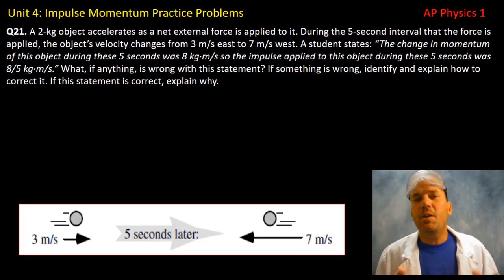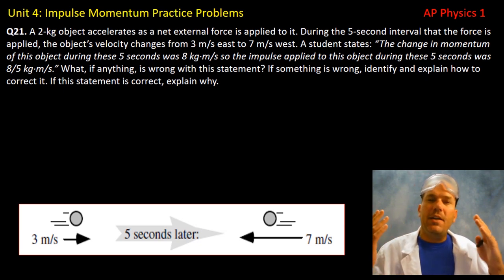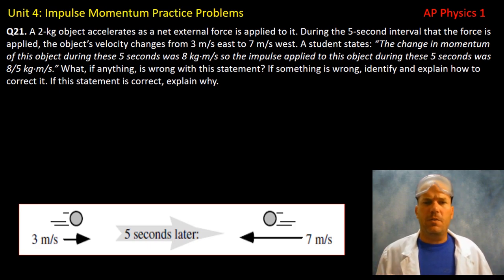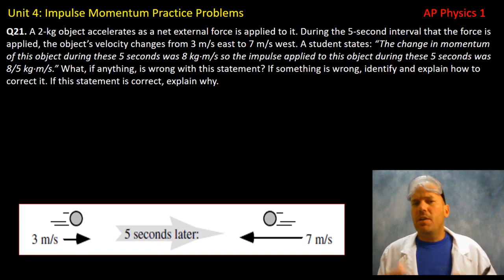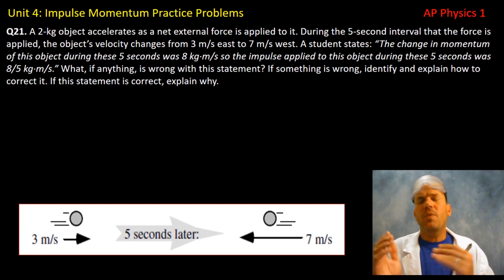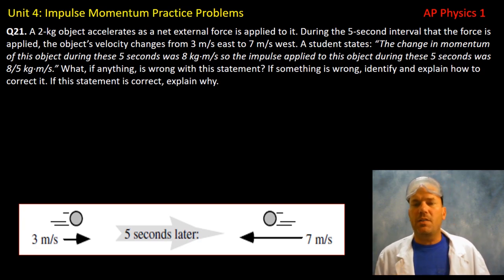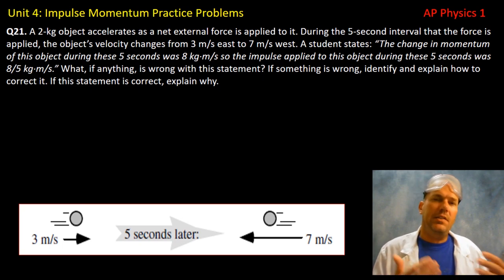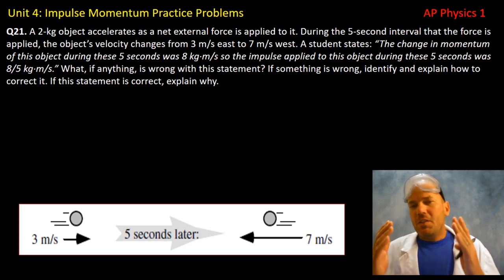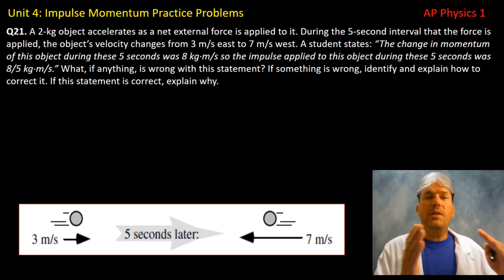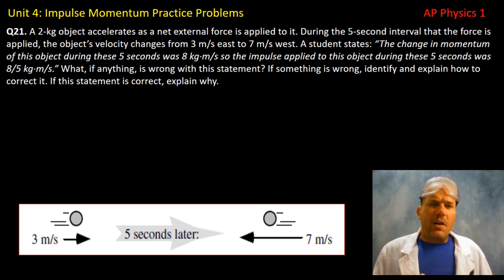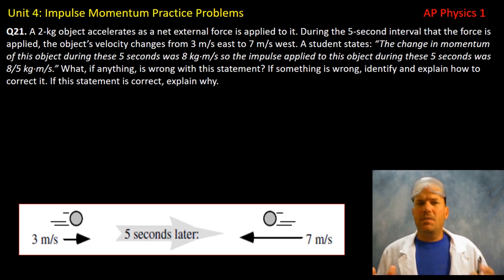For the next several questions, a 2-kilogram object accelerates under a net force during a 5-second interval. Its velocity changes from 3 meters per second east to 7 meters per second west. Question twenty-one: a student says the change in momentum was 8 newton-seconds and the impulse was 8 divided by 5 newton-seconds. Let's calculate the actual impulse.